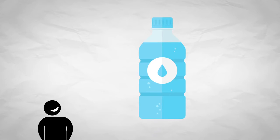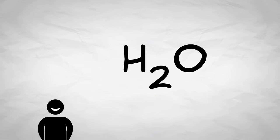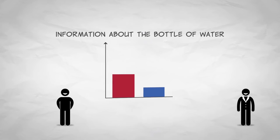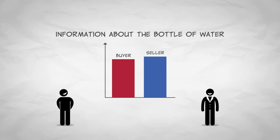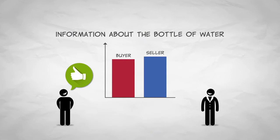Let's start with an example. Imagine you're buying a bottle of water. You probably have a pretty good idea of what you're getting — H2O — especially if you've bought the same brand of water before. The information that the seller and the buyer have is pretty close to equal.